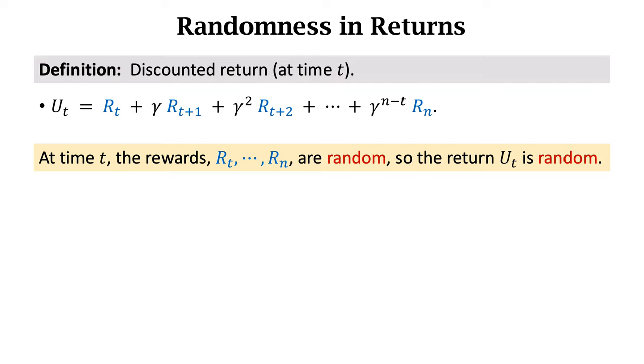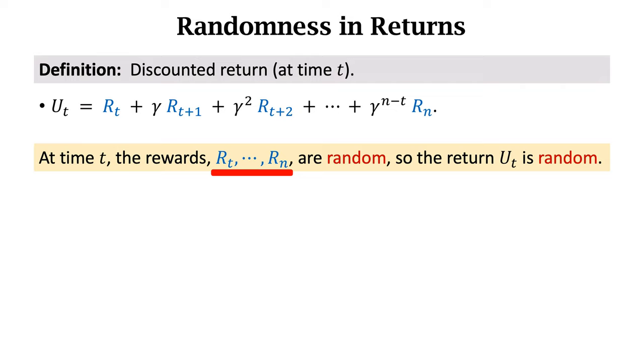At time t, the game has not ended yet, and we have not observed the rewards. The rewards are random variables, denoted by uppercase RT to Rn. Since the return UT is the sum of the rewards, and the rewards are random variables, UT is also a random variable, denoted by uppercase UT.